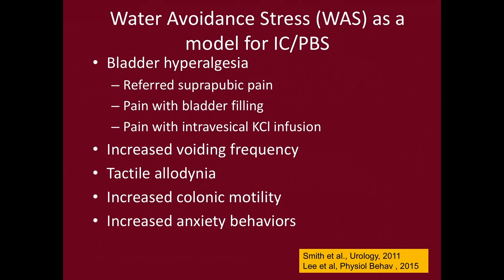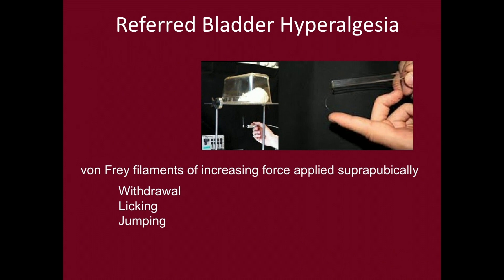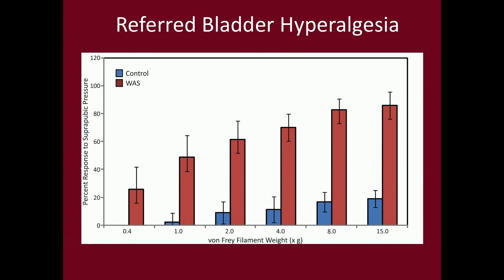We have published that these animals have bladder hyperalgesia, referred pain in the suprapubic region, pain with bladder filling, increased voiding frequency, tactile allodynia — which has also been shown in humans — increased colonic motility, and they are anxious. We test referred bladder hyperalgesia using very fine wires placed in the suprapubic area and observe when animals react by withdrawal, leaking, or jumping. As shown in the chart, the water avoidance stress animals shown in red columns have a very dramatic difference in experienced discomfort compared to the controls shown in blue columns.